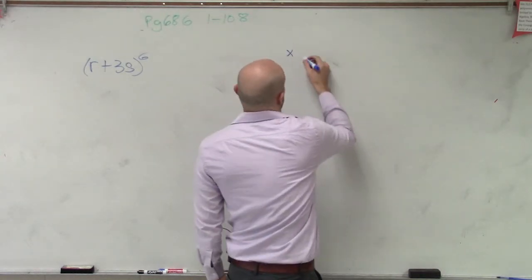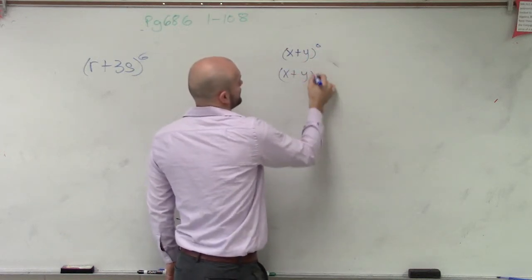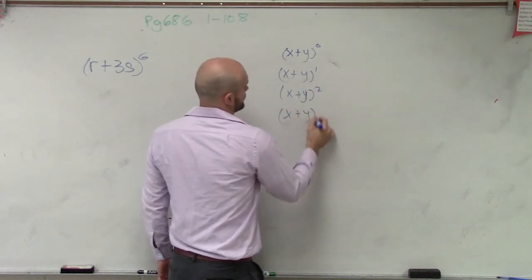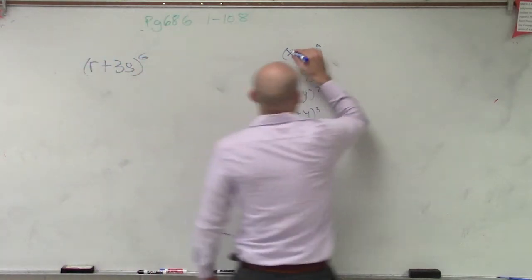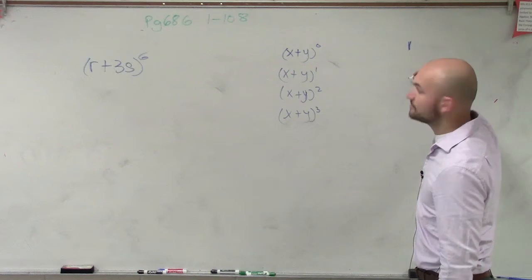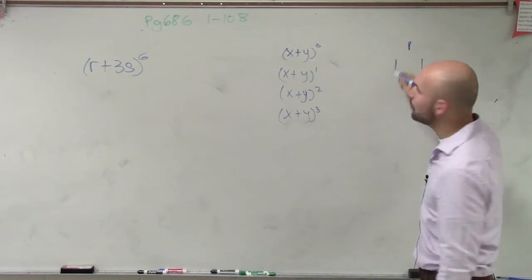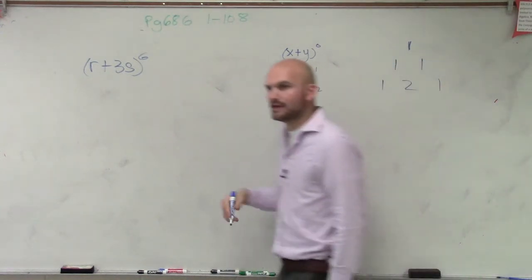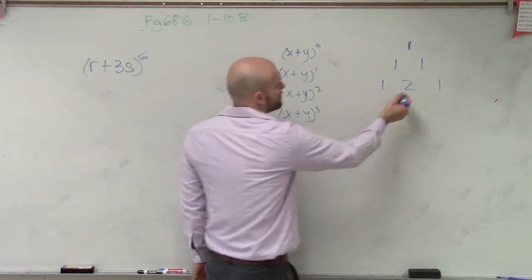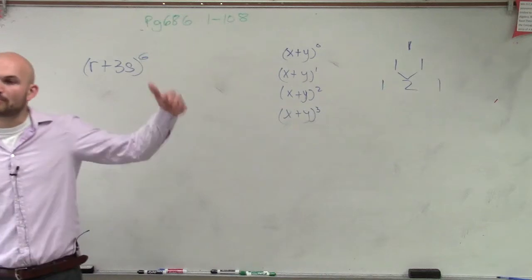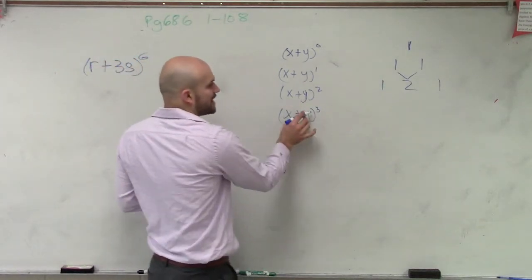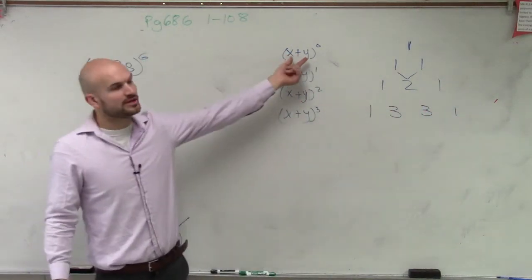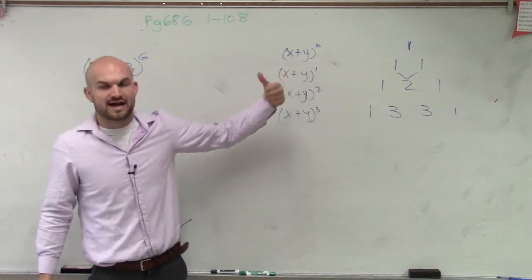If you guys remember, if we expand (x + y) to the 0 power, (x + y) to the 1st, (x + y) squared, (x + y) cubed, there was a relationship in those coefficients. (x + y) to the 0 just gives us 1. (x + y) to the 1st, our coefficients are 1 and 1. When we go to squared, it ends up being 1, 2, 1. And then we noticed a pattern — when we took our two previous terms in the row above, they would add to give us the next coefficient. So for the third, we get 1, 3, 3, 1. Those are the coefficients when you expand with monomials that have coefficients of 1.